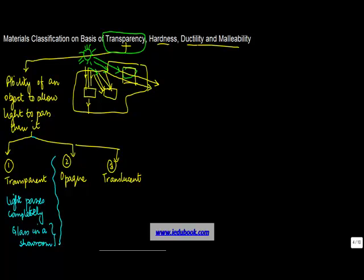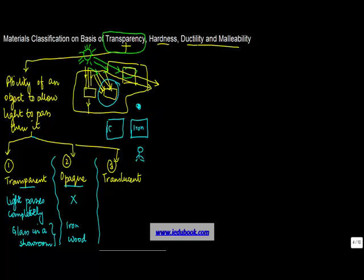An opaque object is one which does not allow light to pass through it, like iron or wood. So if there is an iron rod lying here and if there is an individual who wants to see what is lying behind this wall, he can't see it. If this wall was of iron, the person couldn't see through. But if the same person sees through a glass wall, he will be able to see through it.